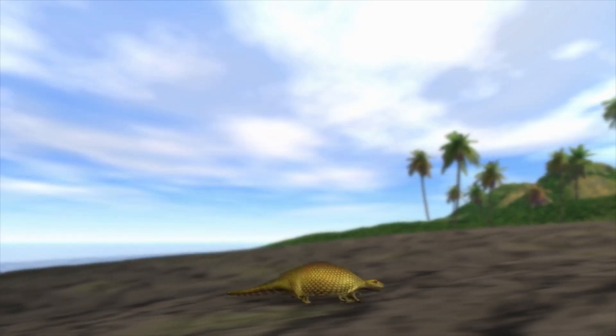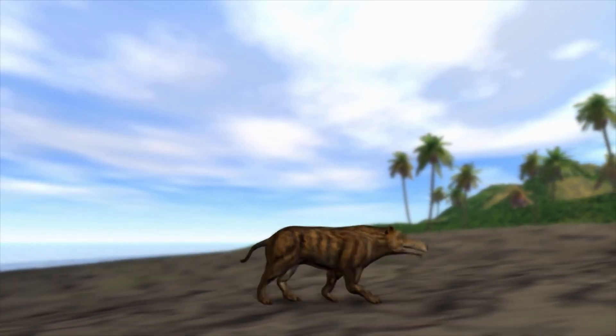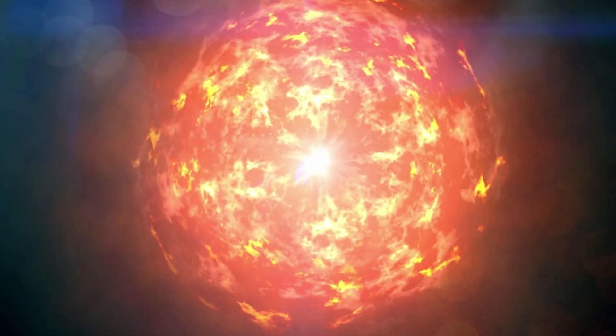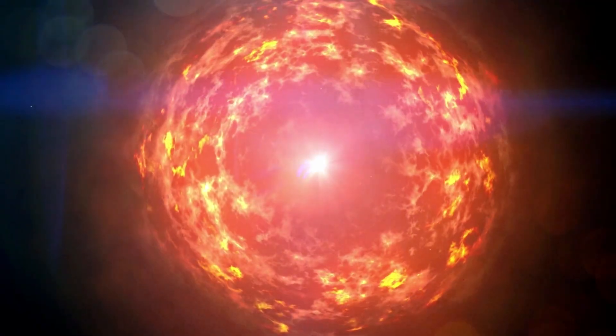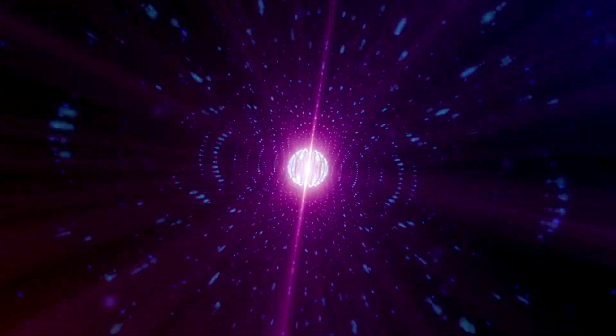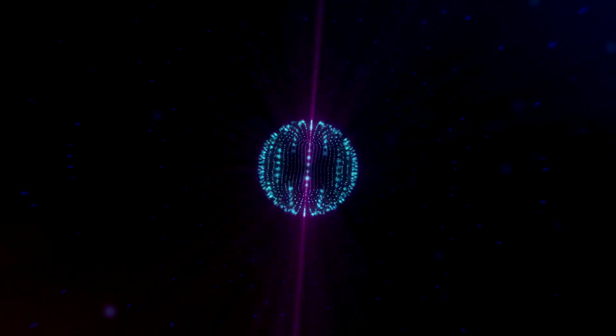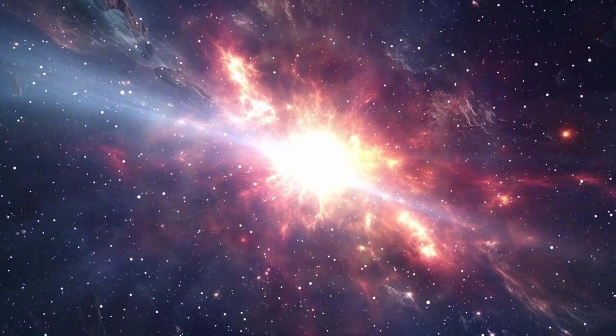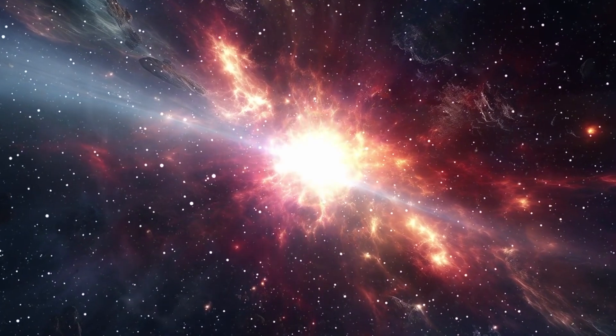Betelgeuse has likely entered its final evolutionary stage, burning its remaining elements rapidly before collapsing under its own gravity. When that happens, the core will implode, and the outer layers will erupt outward in a supernova explosion. For a brief moment, Betelgeuse will outshine the entire Milky Way, visible even in daylight. Astronomers can't say exactly when this will happen. It could be tomorrow or 100,000 years from now. But one thing is certain: when it does, it will be the most spectacular event the human eye has ever seen.